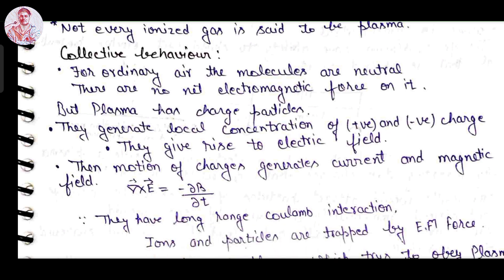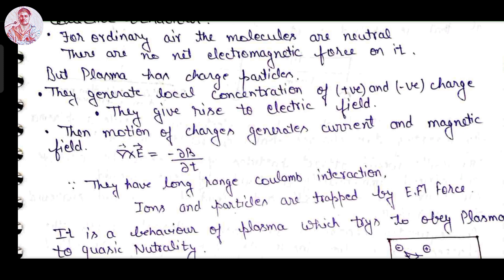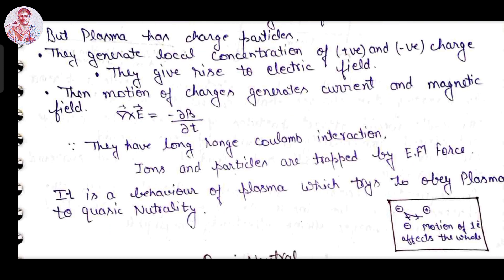The motion of charges generates current and magnetic field. We can easily see from the Maxwell equation: ∇×E = −∂B/∂t. In plasma there is a long range of Coulombic interaction — ions and particles are trapped in electromagnetic force. This is a behavior or property by which the plasma tries to balance all the ions present in it.